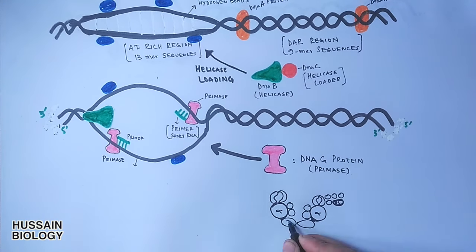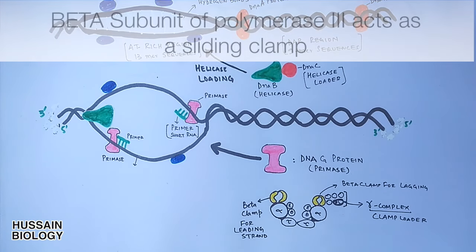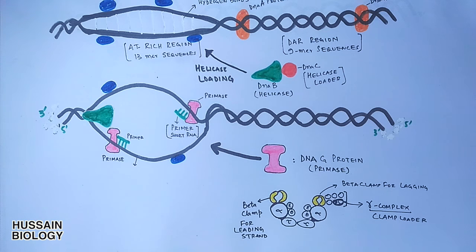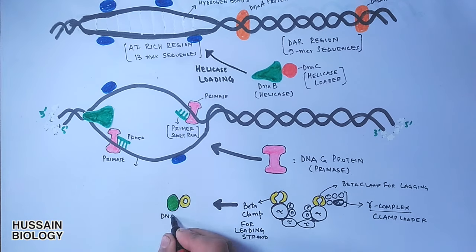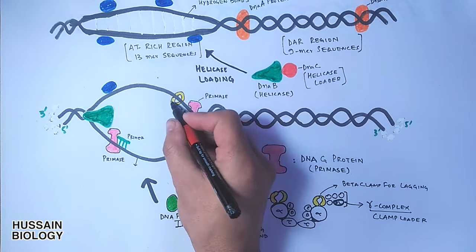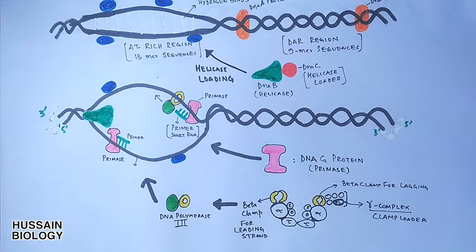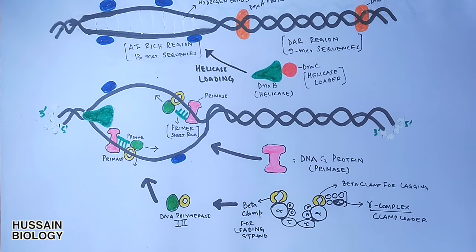Finally, prokaryotes have DNA polymerase III as the main replication enzyme, which has a complex structure as shown in the figure. It has two different beta clamps for leading and lagging strands. The gamma complex of polymerase III acts as a clamp loader, loading the beta clamp of the polymerase to the strands. For convenience we'll show DNA polymerase in this simplified form. To initiate the replication process, the DNA polymerase is loaded with the help of the loader to the DNA strands at the primer site from which DNA replication will start.